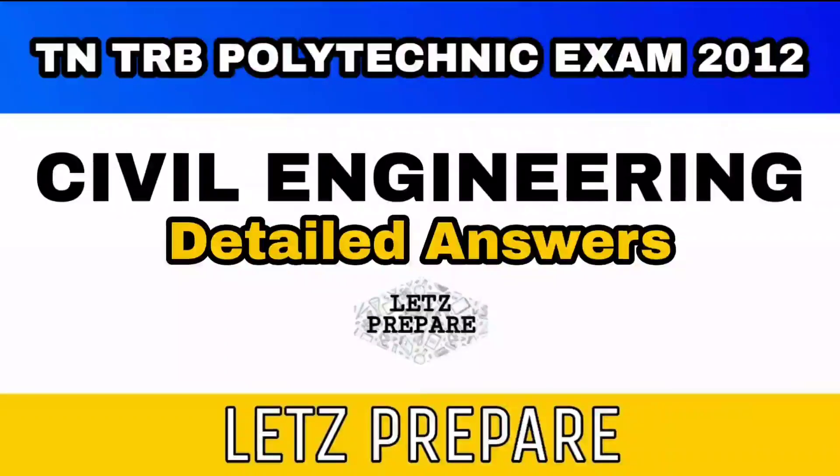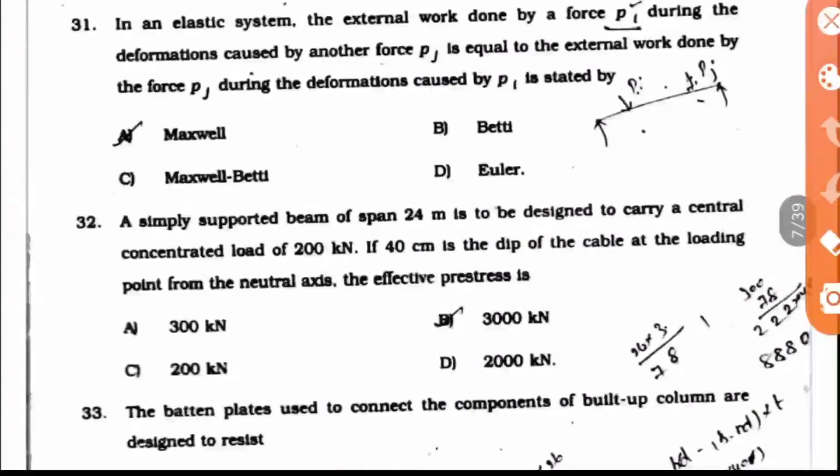Let's prepare for the TNTRB Polytechnic exam 2012 civil engineering question paper. Question 31: In an elastic system, the external work done by a force P_i during deformations caused by another force P_j is equal to the external work done by force P_j during deformations caused by P_i. This theory from strength of materials states that deflection or deformation caused by one force will equal the deformation caused by another force in the same beam. This is dealt by the Maxwell-Betti theorem, so option C is the right answer.